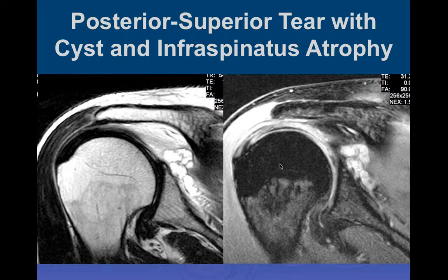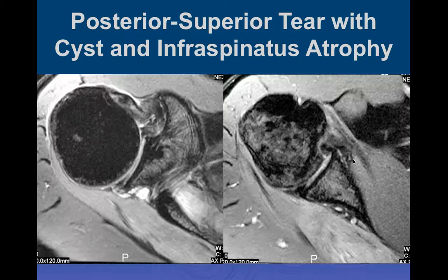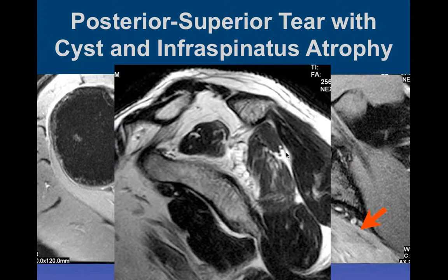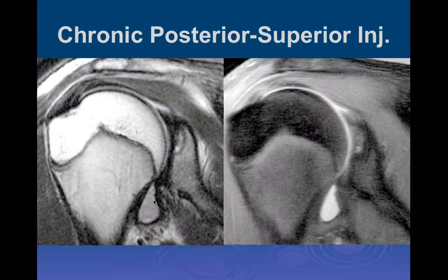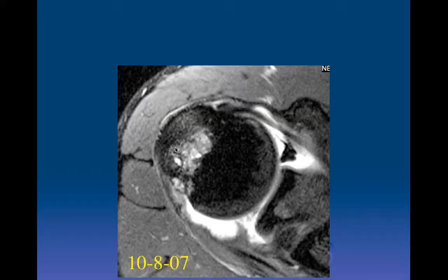Here's another example with a much bigger paralabral cyst due to posterior superior labral tear, and we can again see muscle changes due to denervation atrophy - atrophy of the infraspinatus muscle. Here's another baseball player where we can see the chronic impaction injury of the posterior aspect of the glenoid with actual bony injury, not just labral injury.